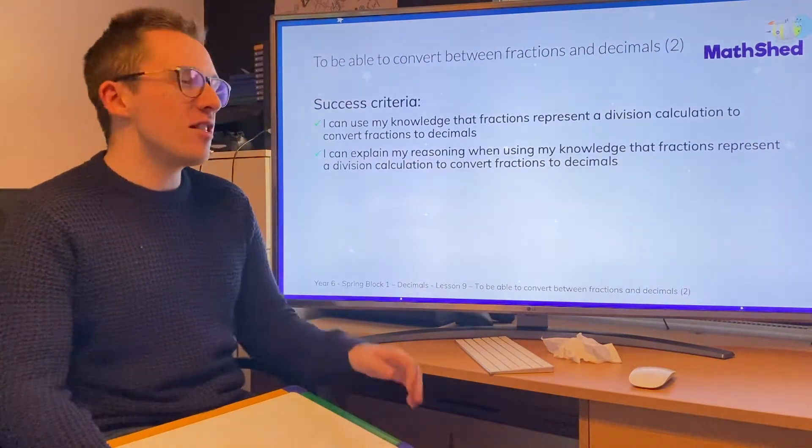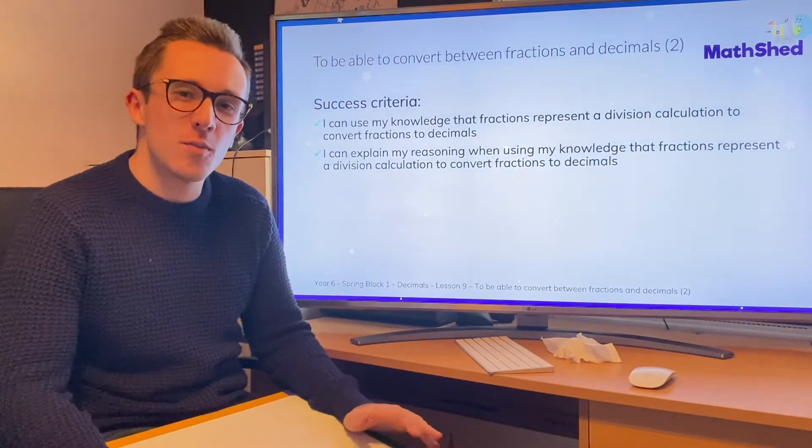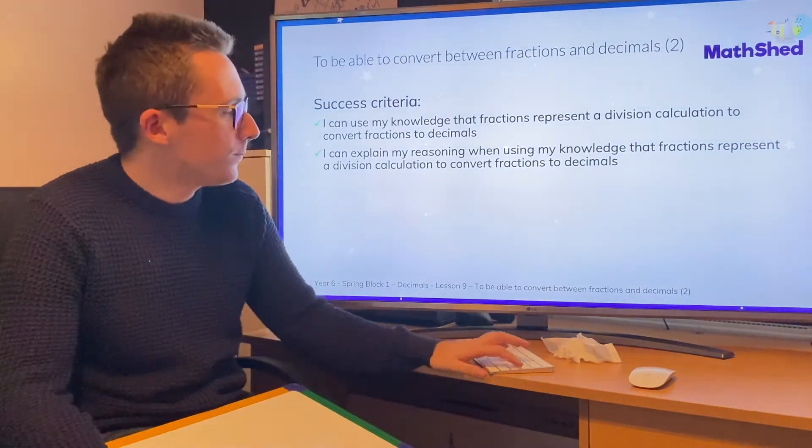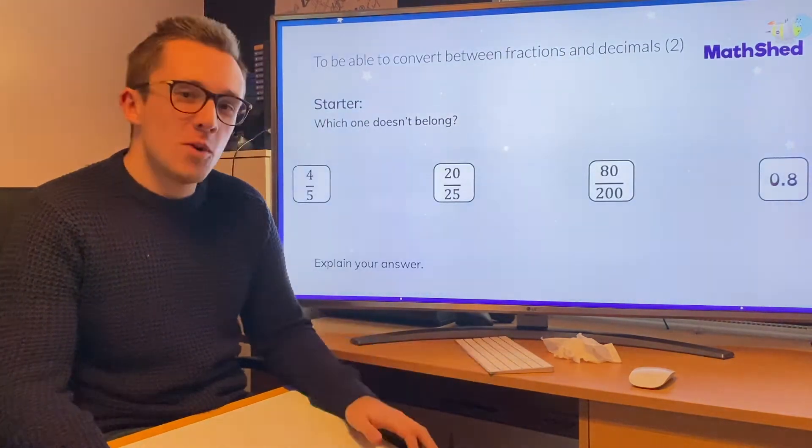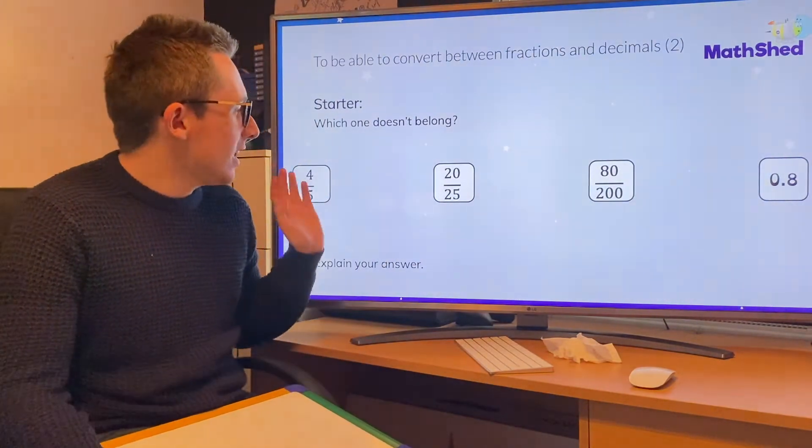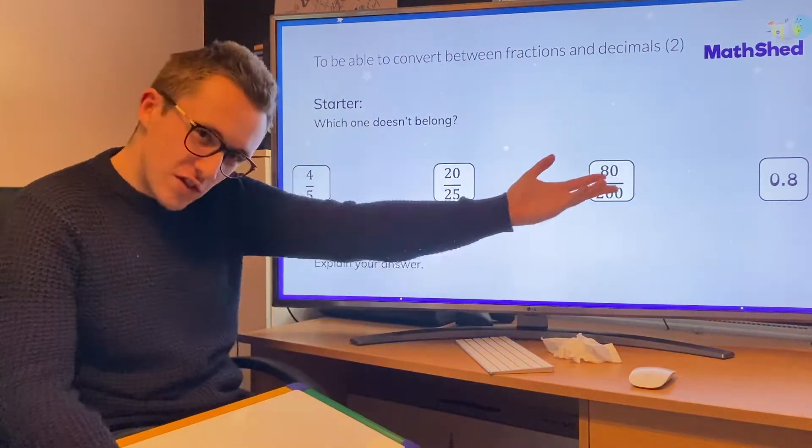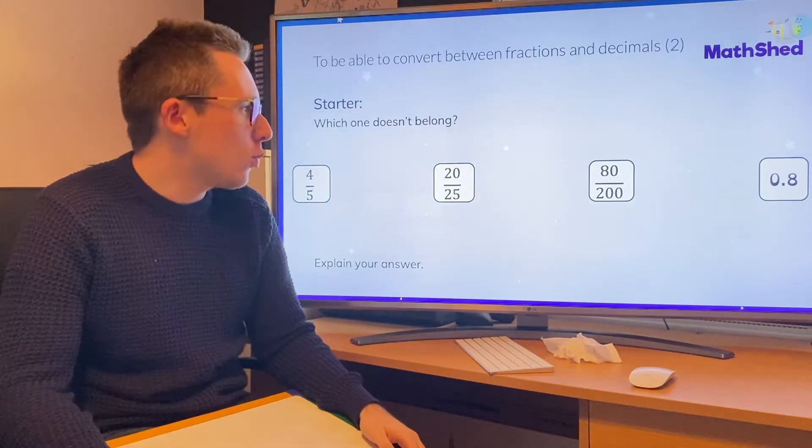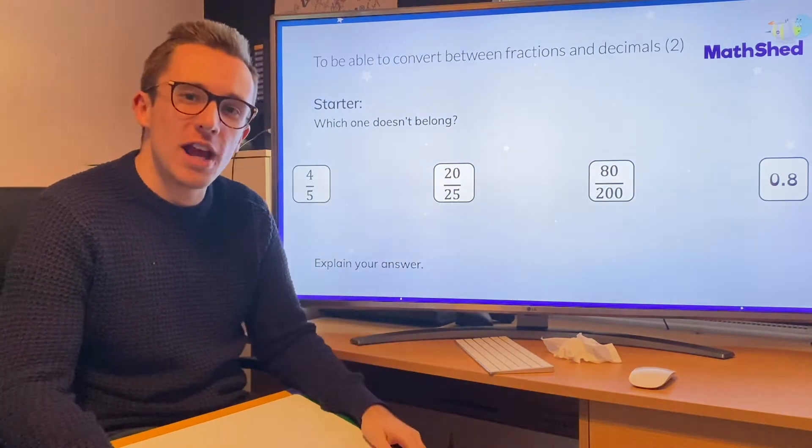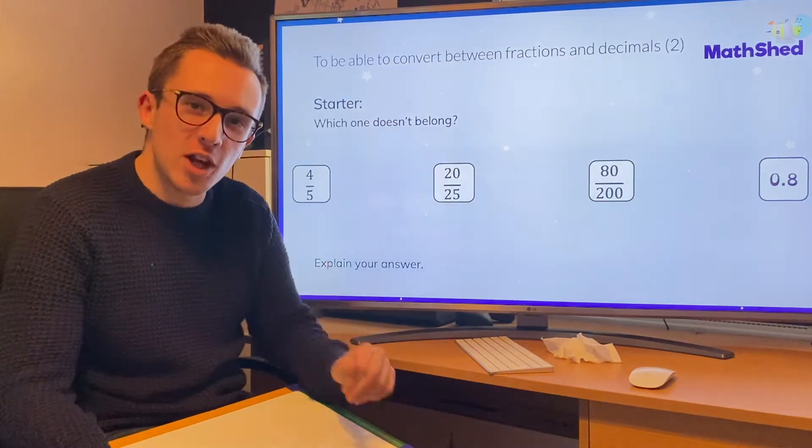Today we're going to be carrying on looking at fractions and decimals and how they relate to each other. We're going to start as we always do by looking at four different fractions and decimals and seeing which one you feel is the odd one out. Pause the video now and have a go.